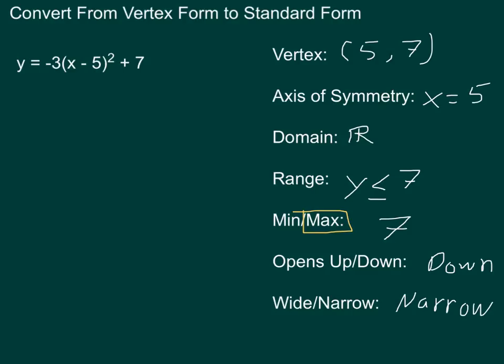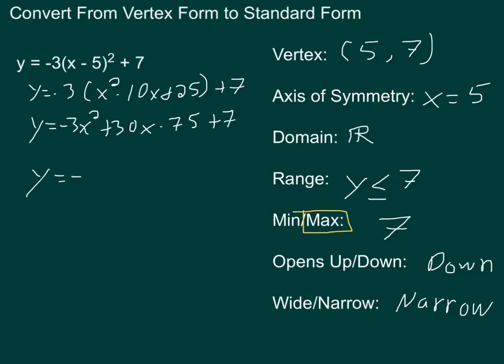How would we convert that to standard form to check our work? The first thing we'd have to do is multiply out (x - 5) squared. When you do that by either foiling or using a Punnett square or whatever method you use, you end up getting x² - 10x + 25, and then we'll have the plus 7 at the end. Now that -3 in front needs to be distributed to all three parts of that trinomial. We're looking at y equals -3x² + 30x - 75 plus 7. And then from there we get y equals -3x² + 30x - 68.